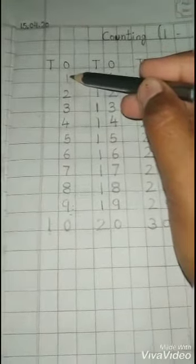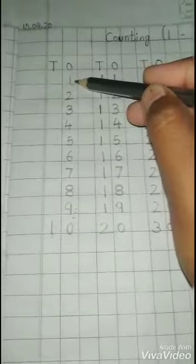To learn how to write counting in the place of ones and tens, you have to know the rule that one number has to come only in one box. In one box, only one digit should come.